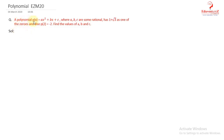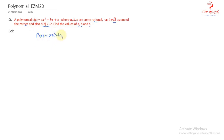The question is: a polynomial p(x) = ax² + bx + c, where a, b, c are rational numbers. It has one plus root three as one of the zeros, and p(2) = -2. Find the values of a, b, and c. So here a quadratic polynomial p(x) = ax² + bx + c is given.